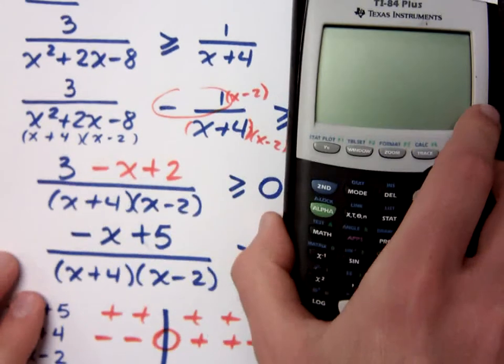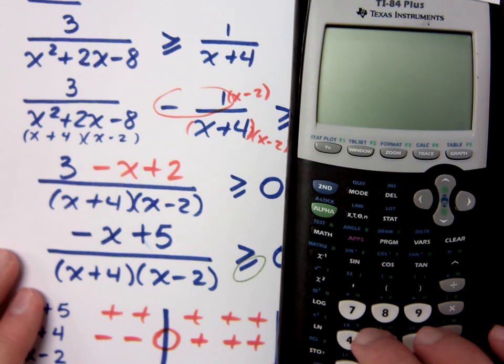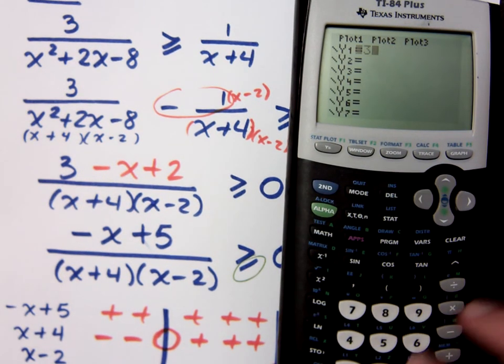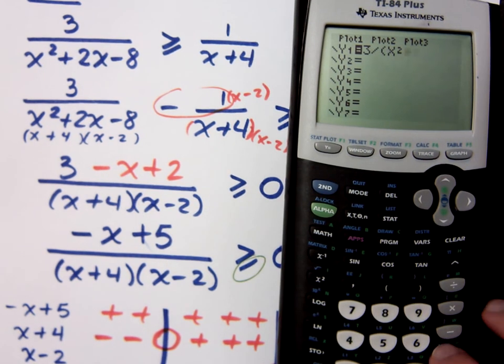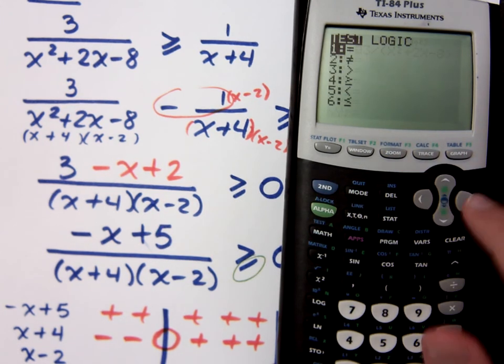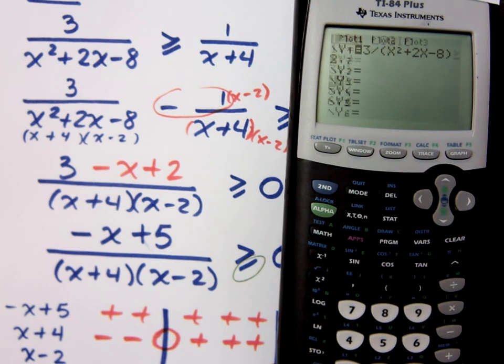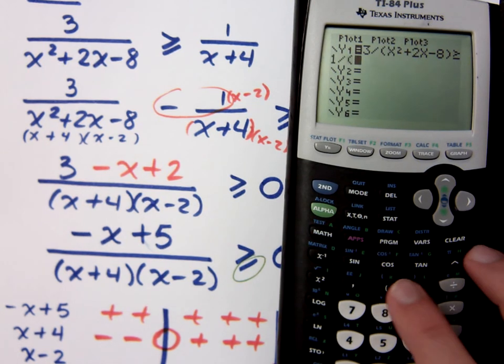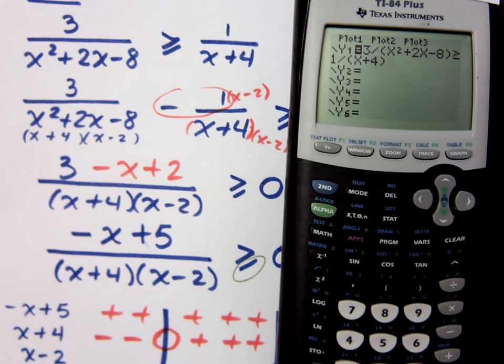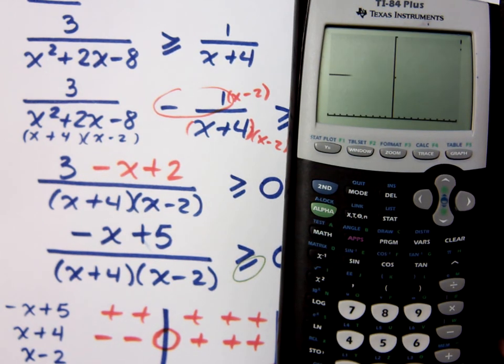Now, if we check real quick on the graphing calculator, I've got three divided by the whole quantity, make sure you use parentheses correctly, x squared plus 2x minus 8, my logic symbol, or my test symbol, is greater than or equal to one divided by the quantity, x plus 4. How many sections am I supposed to have? I'm supposed to have 2, let's see if that shows up here when I graph this.